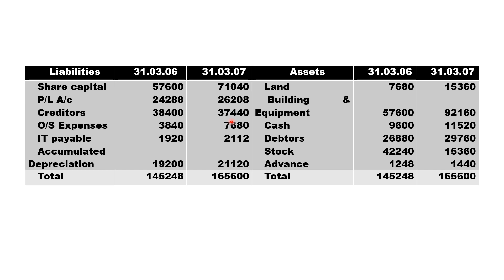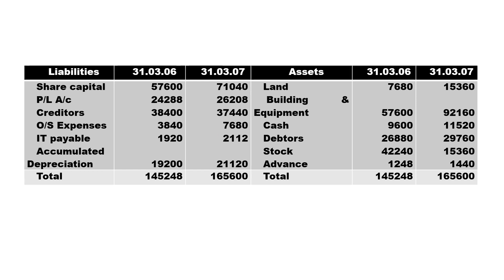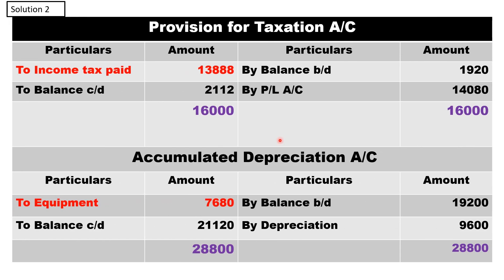Creditors are paid minus. Outstanding expenses show an increase compared to last year; total increase is three thousand eight forty. Students, you need to prepare a provision for tax account because there is a decrease in creditors of nine hundred and sixty. It is a liability — begin on the credit side by balance brought down one thousand nine twenty.